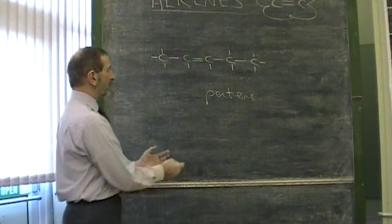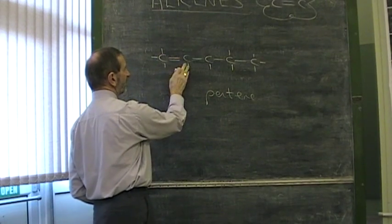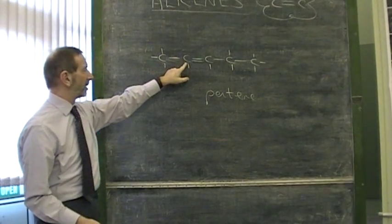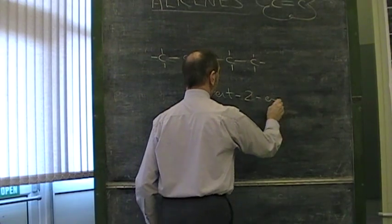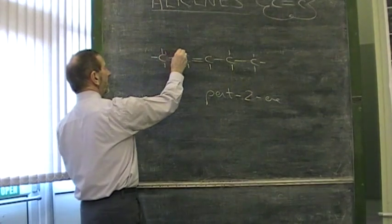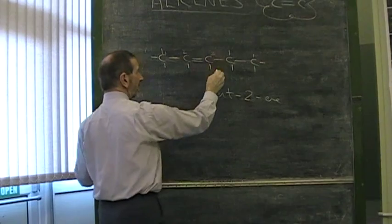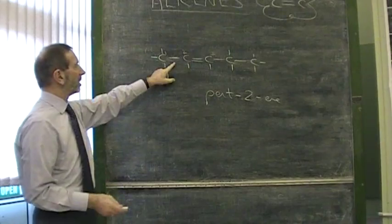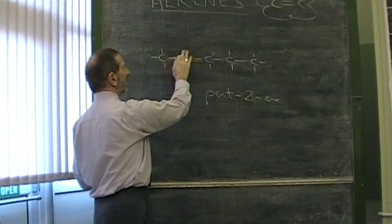Well, no, because pentene could refer to this molecule or to this molecule. We have to specify just whereabouts that double bond is. If we call this carbon atom number one and this carbon atom number two, we could call it pent-2-ene. Would it matter if we number it from the other side? We always use the smallest number possible.